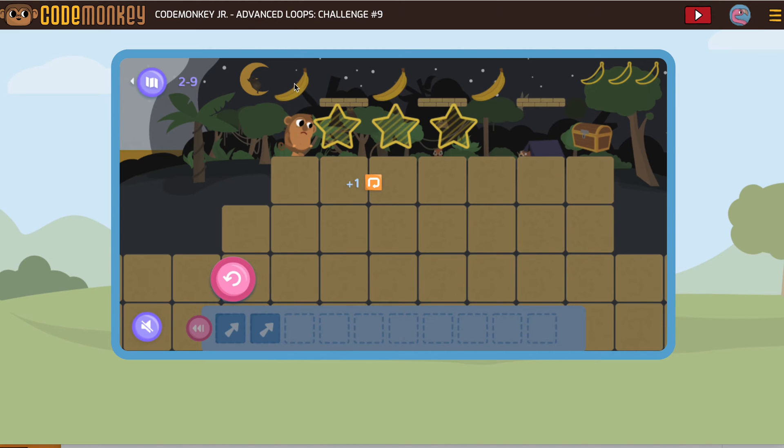So here it looks like we're going to jump up one time straight. Then we need to go forward one, two times. And that will be what we put in our loop.